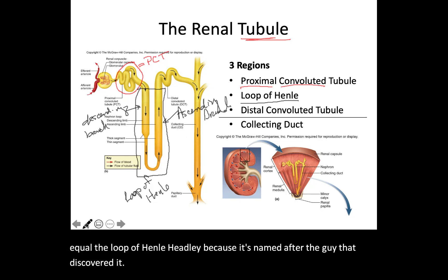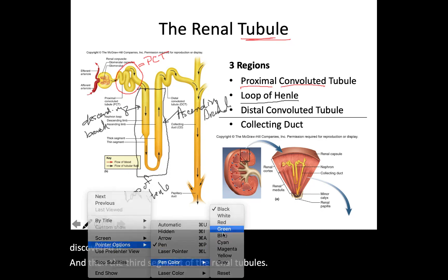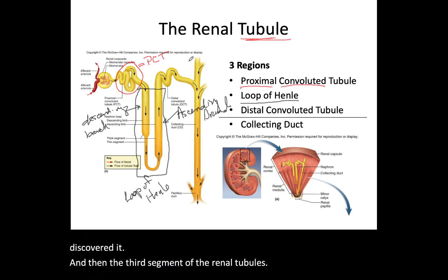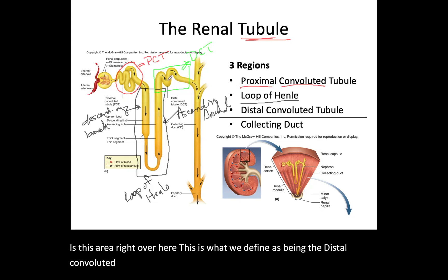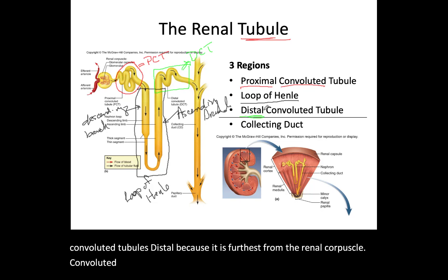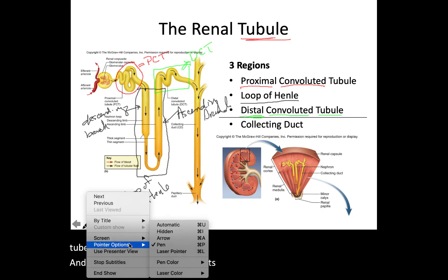The third segment of the renal tubules is the distal convoluted tubule. Distal because it is furthest from the renal corpuscle. Convoluted because it also winds and bends. Tubule because it is still a tube. And so those are the three segments of the renal tubules.